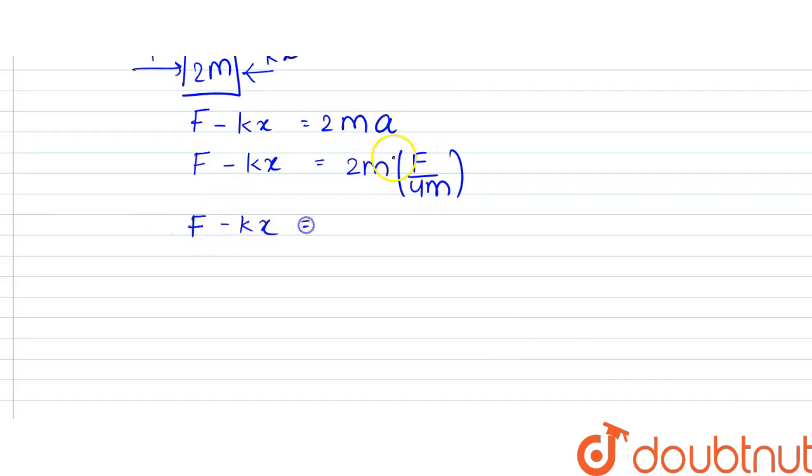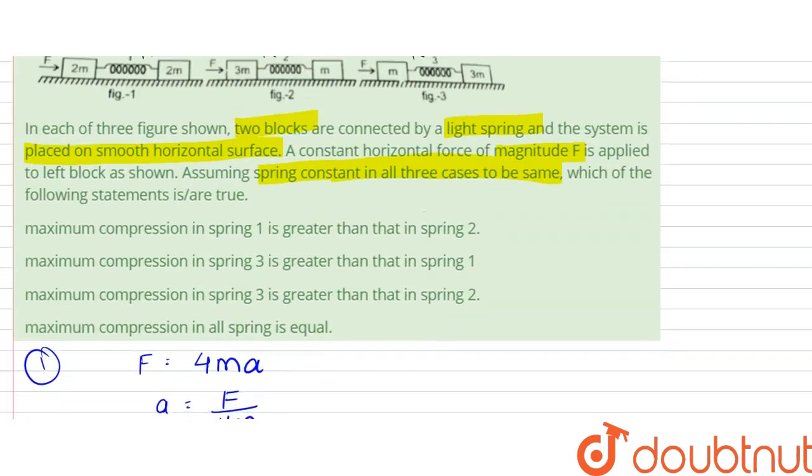From here, F minus kx would be equal to F by 2. So kx is equal to F minus F by 2, which is F by 2 itself. So x can be written as F by 2k. This is the compression in the first case.